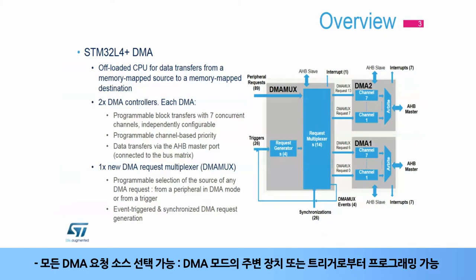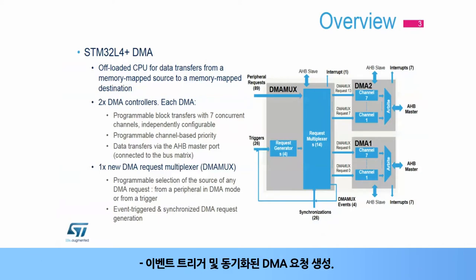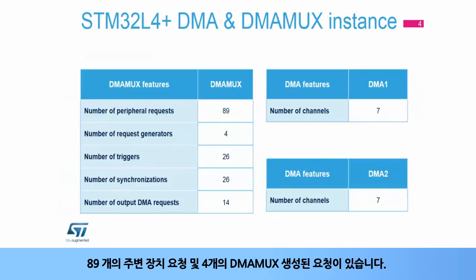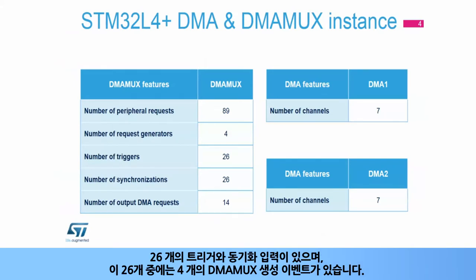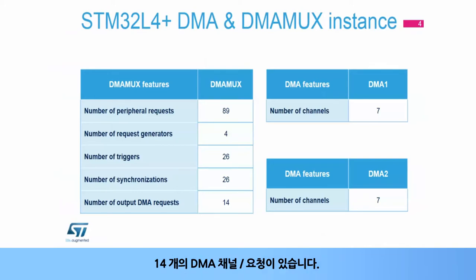with programmable selection of the source of any DMA request, from a peripheral in DMA mode or from a trigger, and event-triggered and synchronized DMA request generation. There are 89 peripheral requests and four DMA MUX generated requests. There are 26 triggers and synchronization inputs, among which there are four DMA MUX generated events. There are 14 DMA channels and requests.